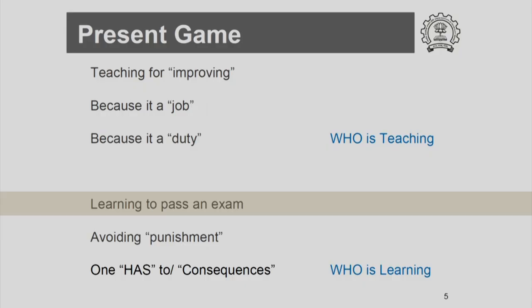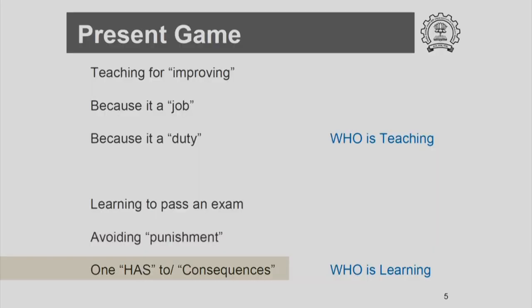Then there is the other side — the audience. Who is sitting over there? Someone who is learning because they have to pass an exam — their entire studying is oriented so that they can pass an exam. Or maybe it is even earlier: people do not want to be punished, or they know there are consequences and therefore one has to do it. That is the kind of thinking that is out there in the audience, the people we are trying to reach.